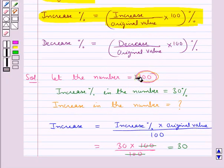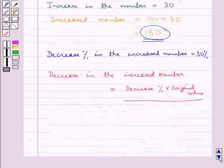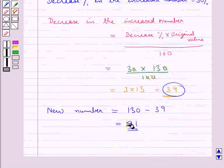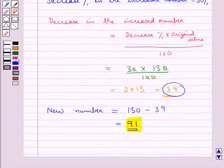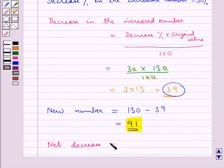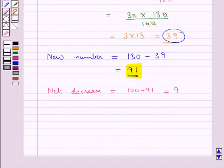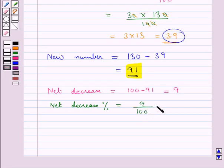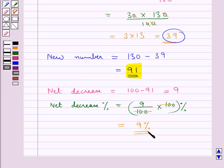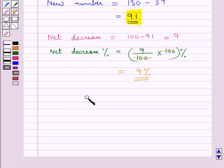Our original number was 100 and the new number is now 91, so obviously there is a decrease. Hence the net decrease is equal to 100 minus 91, which is equal to 9. Then net decrease percent is equal to 9 upon 100 into 100%, and the 100s cancel, giving us 9%. This is the net decrease percent, so the final answer is 9%.